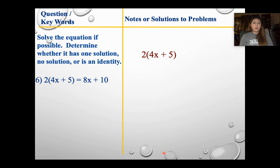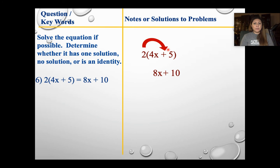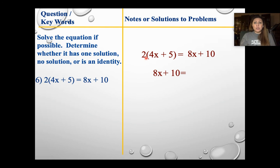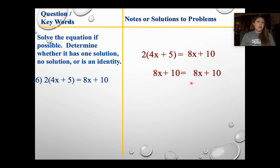Let's practice. We're going to distribute on the left side: 2 times 4x gives me 8x, 2 times 5 gives me 10. I can't add those together, so I leave them. Bringing back the right side, I can't do anything with that either, so I bring that down. Now if you're paying attention, you'll notice on the left side I have 8x plus 10, and on the right side I have 8x plus 10.